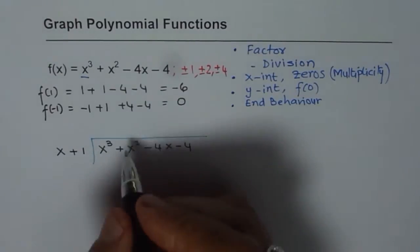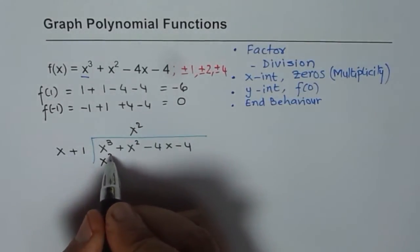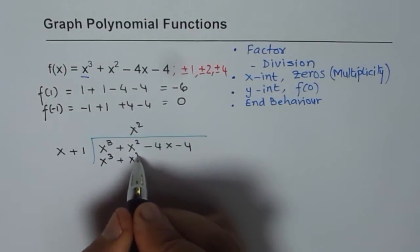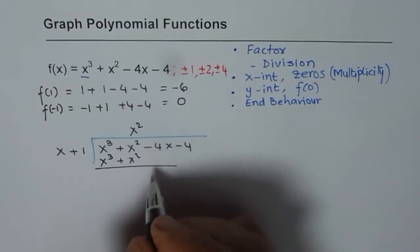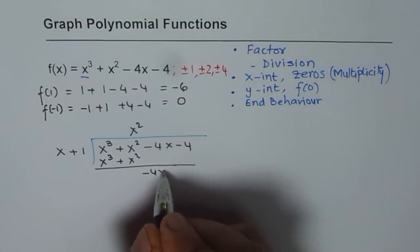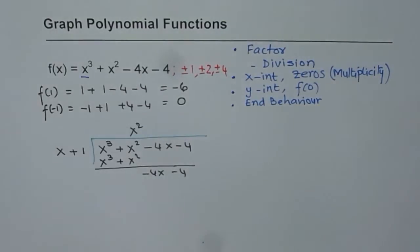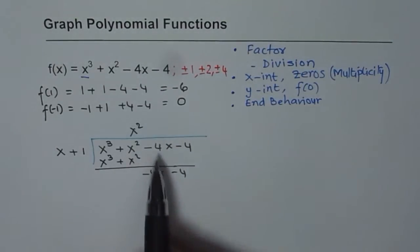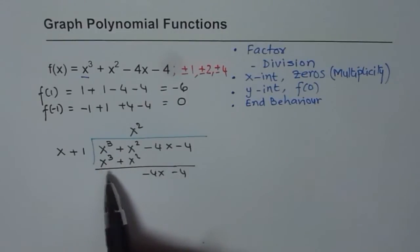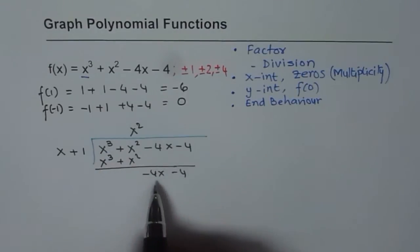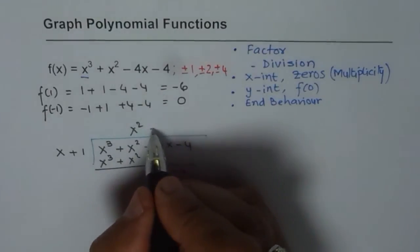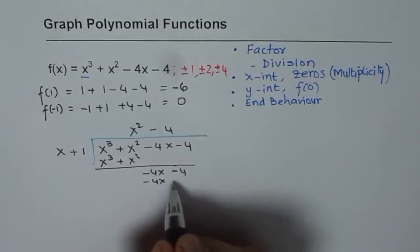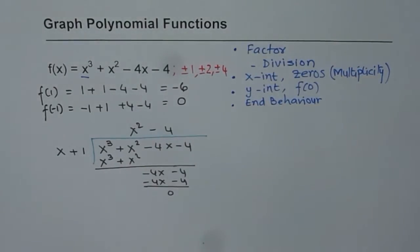Now we need to multiply by x². So we get x³ + x². Fortunately 0. So let's bring down both these terms: -4x - 4. If you get both the terms, you have to bring both the terms. If one was 0, which normally will be, you just bring one of them. So now we just multiply by minus 4 and we get -4x - 4, which is 0. So we get x² - 4 as the second factor.